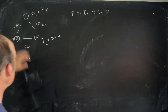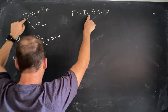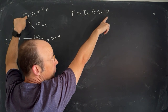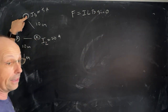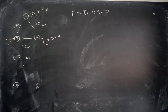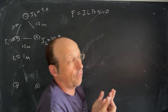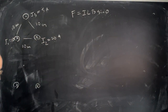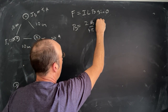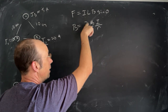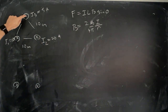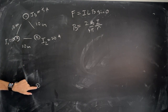I know the current in wire 3, I know the length because I just picked it. If I can find the magnetic field at wire 3, then I can find the force — the angle between those two is going to be 90 degrees. So the first part of the problem is to find the magnetic field at this wire due to these two wires. The magnetic field due to a wire is 2 mu-naught over 4-pi times I over R, but it's a vector.